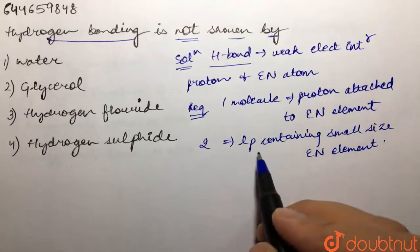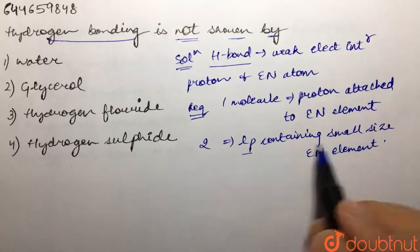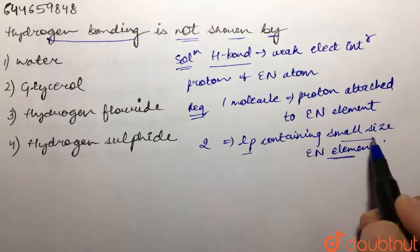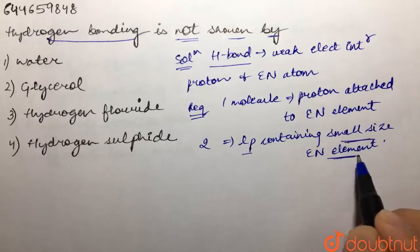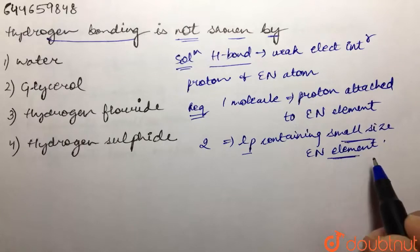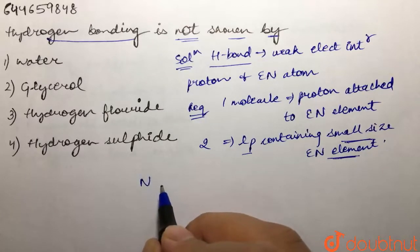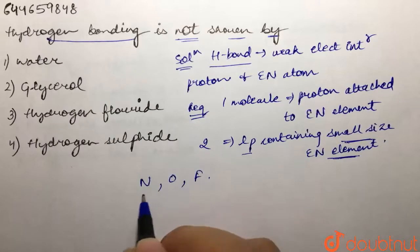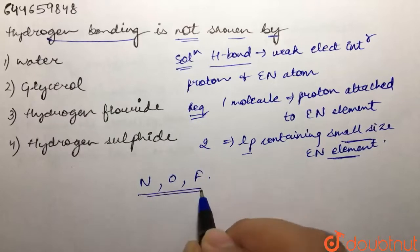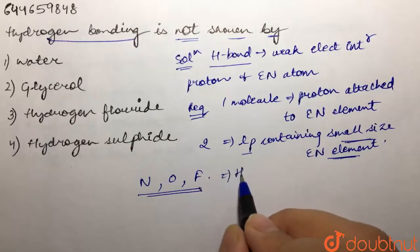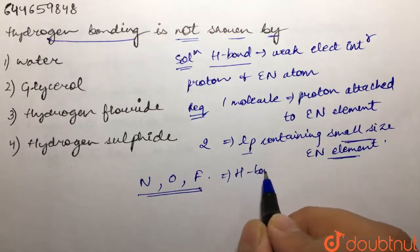The second molecule must have a lone pair containing a small size electronegative element. Both conditions — small size and high electronegativity — are satisfied by three elements: nitrogen, oxygen, and fluorine. These are the only ones able to form hydrogen bonds, so the molecule must contain nitrogen, oxygen, or fluorine to exhibit hydrogen bonding.